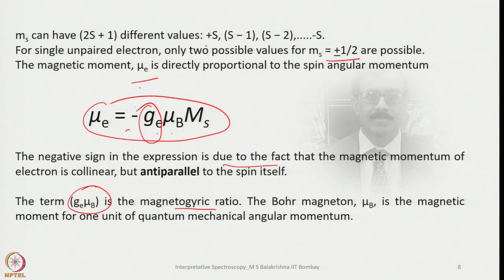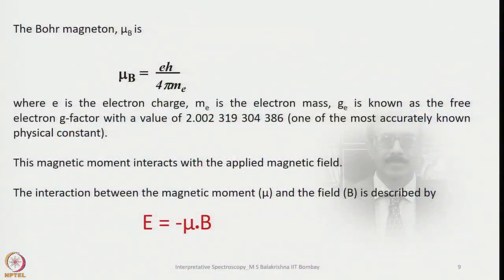The Bohr magneton μ_B is the magnetic moment for one unit of quantum mechanical angular momentum, given by μ_B = eh/(4πmₑ), where e is the electron charge and mₑ is the electron mass. The free electron g-factor gₑ carries a very accurately known value of 2.002319304386 — perhaps one of the most accurately known physical constants in physics.